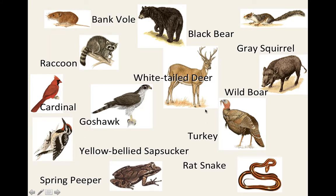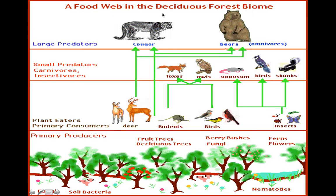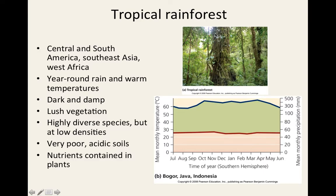Also found in deciduous forest regions are snakes and black bears. The food web of a deciduous forest starts with plants as producers, then first consumers that eat only vegetation, secondary consumers that feed on multiple species, and finally tertiary consumers at the top — such as cougars and bears.